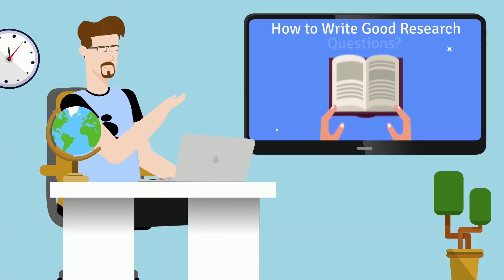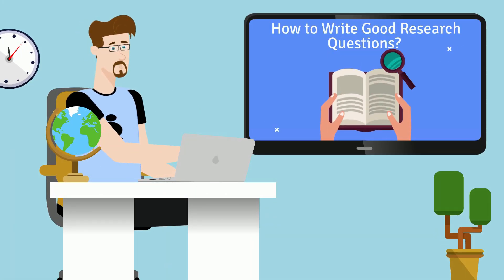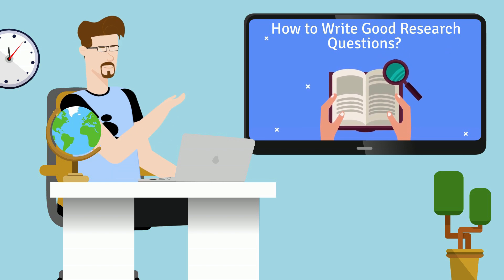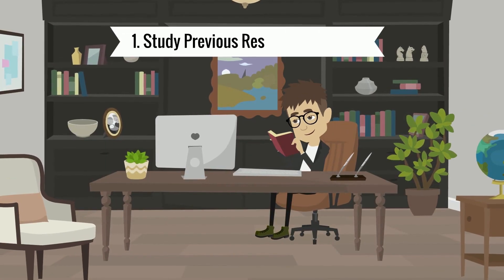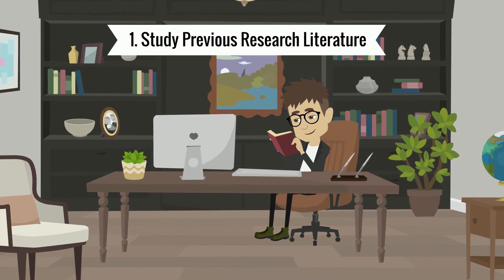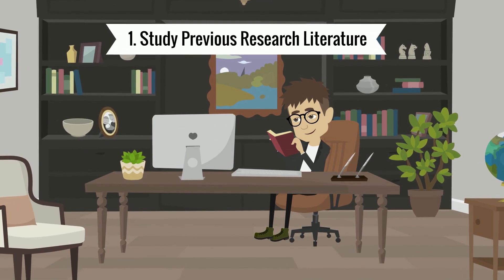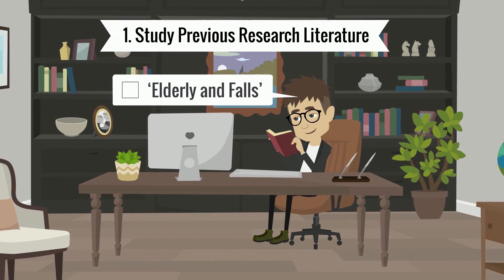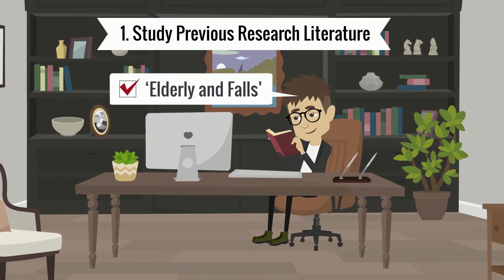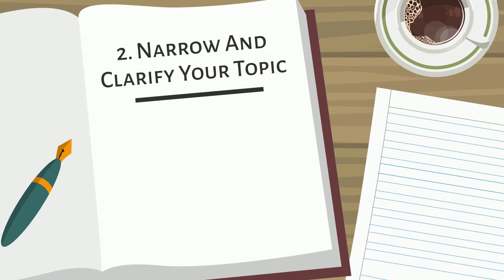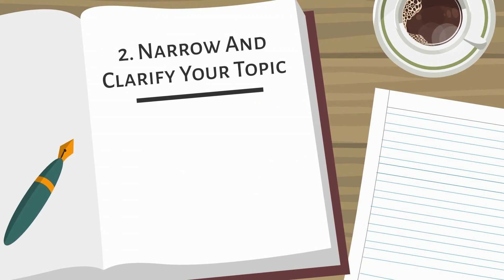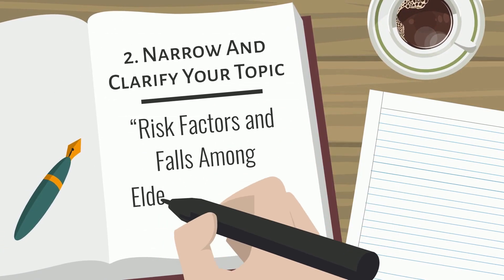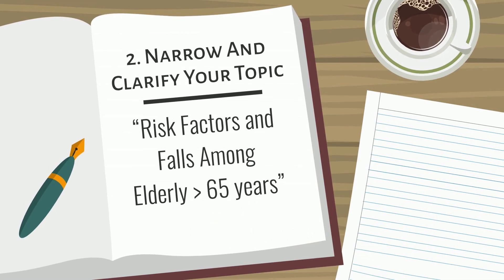How to write good research questions. Follow these steps: first, ensure you have studied previous research literature on your subject and chosen a research problem area to focus on — for example, elderly and falls. Second, narrow and clarify your topic — for example, risk factors and falls among elderly greater than 65 years.